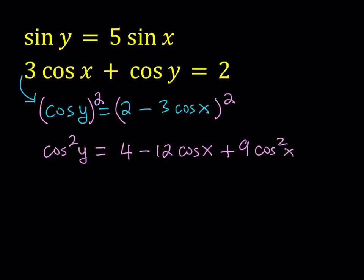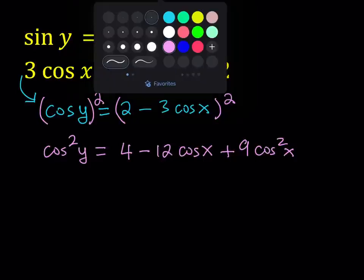Now, this expression has two variables — x and y, or cosine x and cosine y — so we do need another equation. Notice that in the first equation we only have sine y and sine x, and in the second one we only have cosine. So what we need to do is convert these, and we're going to be using the Pythagorean identity for that.